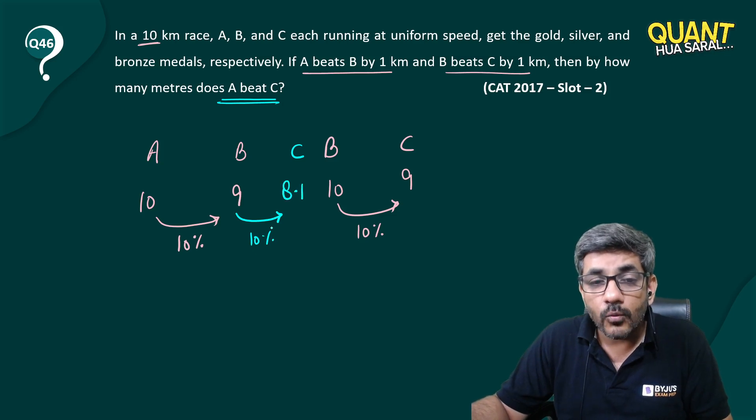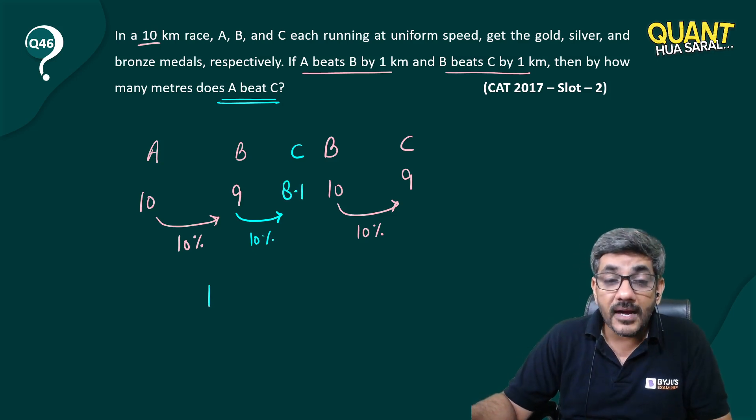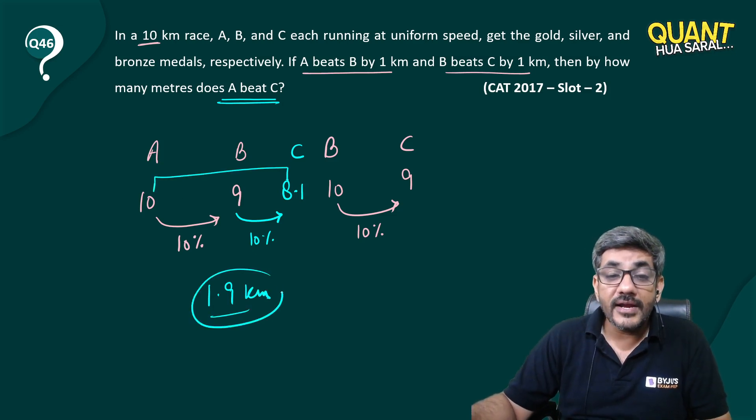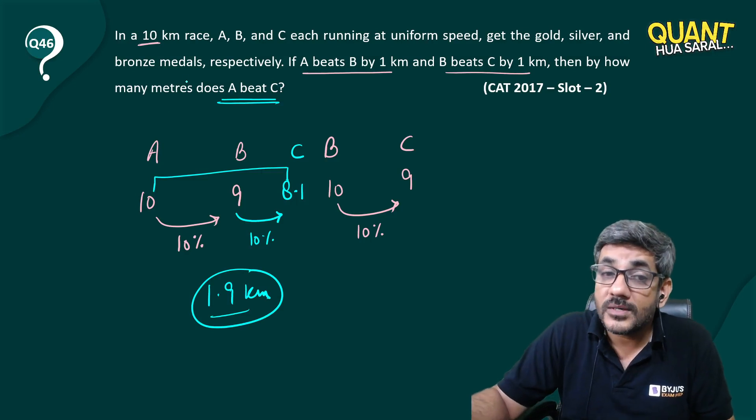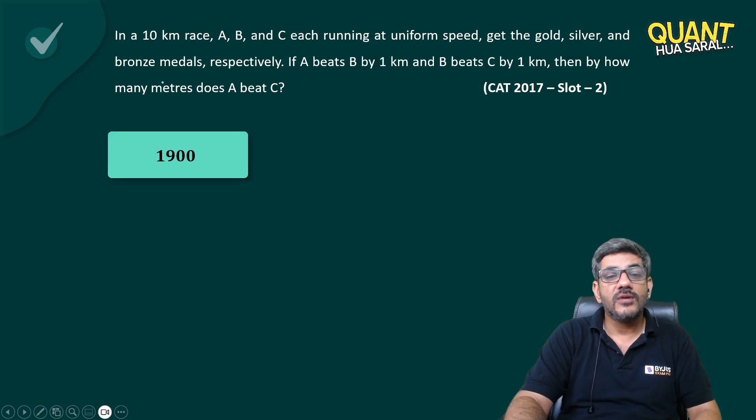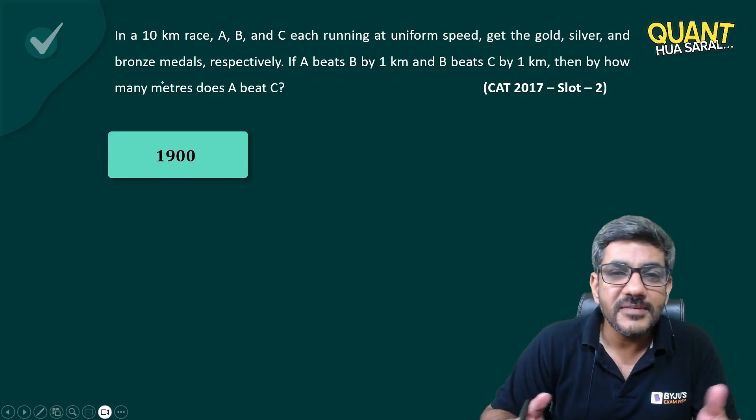8.1. So A will beat C by 1.9 kilometers, that is 10 minus 8.1. And 1.9 kilometers is how many meters? Because the question is asking about meters, 1.9 kilometers is equal to 1900 meters. That's an aptitude way of answering the question. Thank you.